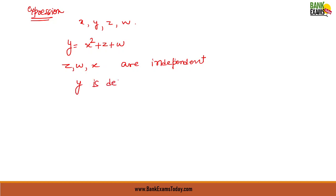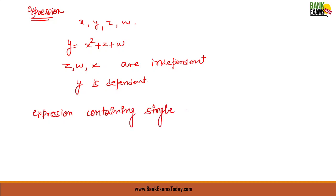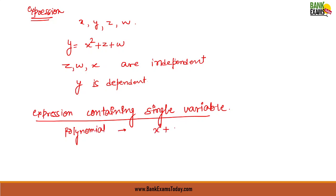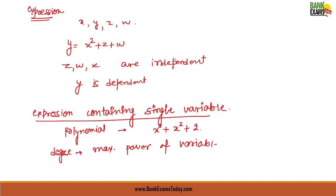Whereas y is the dependent variable — it depends upon the values of x, z, and w. When an expression is written in the form of only a single variable, it is called a polynomial. For example, x cubed plus x squared plus 2. The degree of a polynomial is the maximum power of the variable in that polynomial.